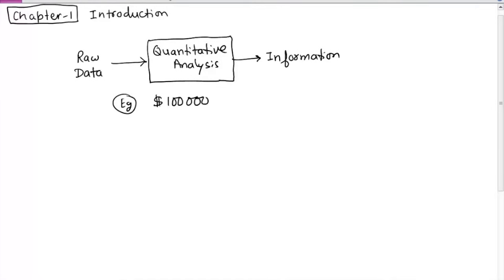Suppose you have $100,000. You may want to decide how to invest this money. Let's say you have two options: put the money in a bank as a CD, or in stocks. CD doesn't earn much return right now, but the stock market has been doing well. However, stocks carry risk of losing money, whereas CD is much safer. To make a decision, analysis is needed — how much return you can get or how much risk you have. Once you get proper insight from quantitative analysis, you can use that to make a decision.